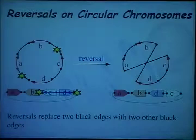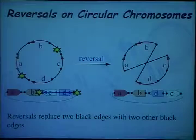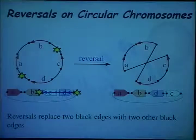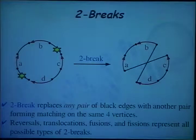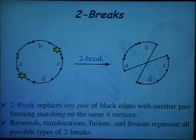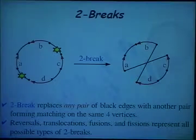If we apply a reversal to our genome, reversing genes C and D, we'll get this genome, and the corresponding graph would look like this. We notice that two black edges are removed from the graph and two new black edges are added, forming a matching on the same four vertices. The same happens for fission and fusion. Therefore, this leads to defining a new operation on the graph which replaces any two black edges with another two black edges forming a matching on the same four vertices. It turns out that reversals, translocations, fusions, and fissions represent all different types of two-breaks.